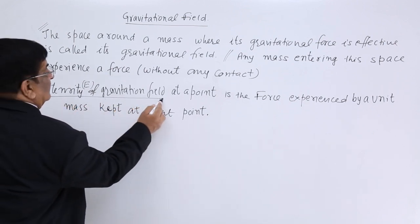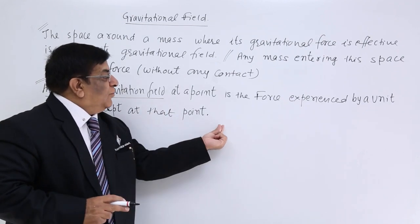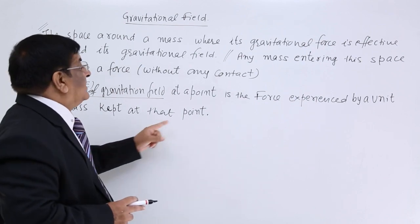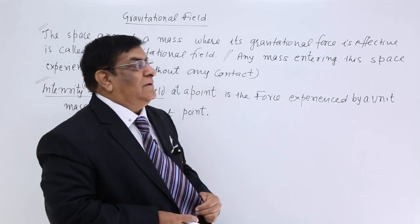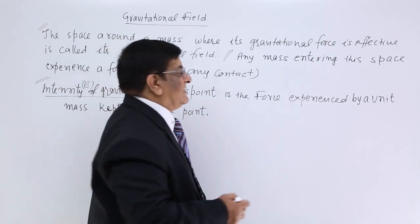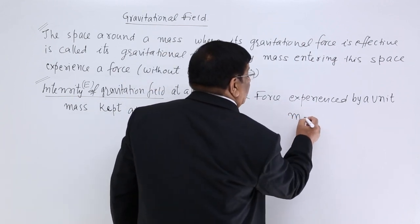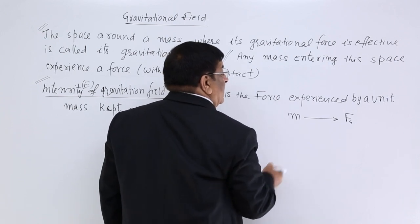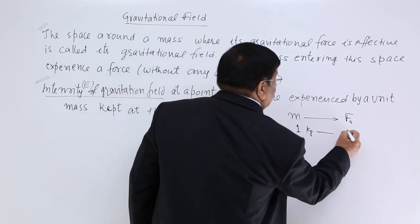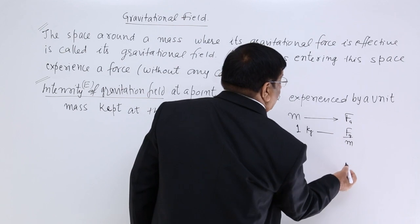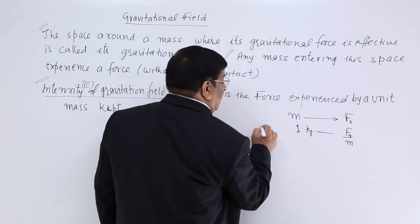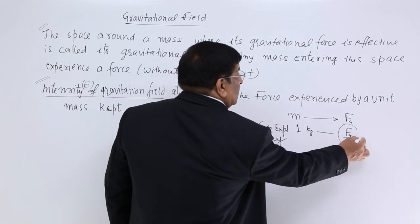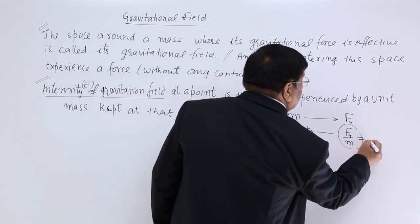What is the intensity of gravitational field? Intensity of gravitational field changes from point to point, place to place. The intensity of gravitational field at a point is the force experienced by a unit mass kept at that point. We place a test mass M and find it experiences a gravitational force equal to F. But what will be the force on 1 kg? That will be F divided by M — gravitational force divided by mass of the body. This is the force experienced by 1 kg, which is known as the field.